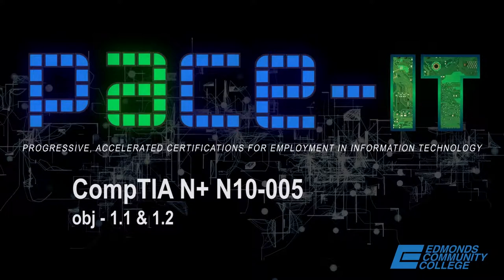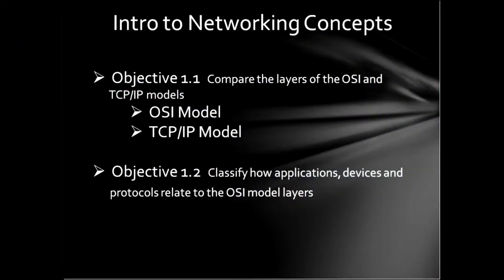Good evening and welcome to tonight's webinar for CIS 205 T&I. Tonight we will be discussing CompTIA's Network+ exam, which is number N10-005. Tonight we will be covering objectives 1.1 and 1.2 of the exam. Objective 1.1 is comparing the layers of the OSI and TCP/IP models, and objective 1.2 is classifying how applications, devices, protocols, and other things relate to the OSI model.